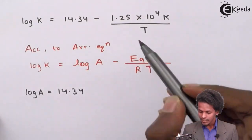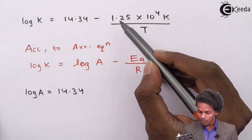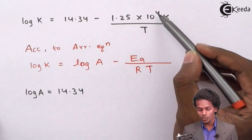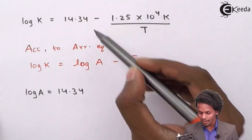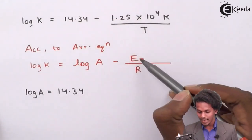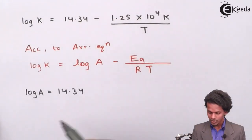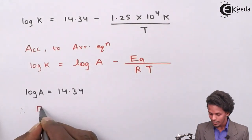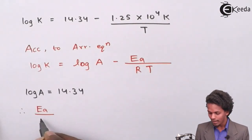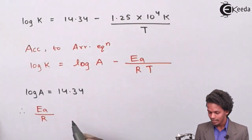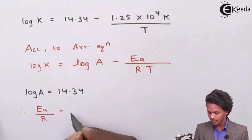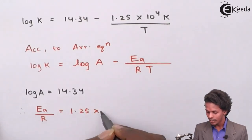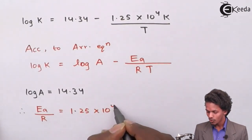We can also see that the value 1.25 × 10⁴ corresponds to Ea divided by R. So therefore the value of Ea/R is 1.25 × 10⁴.